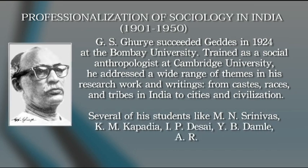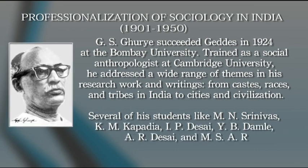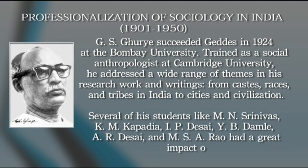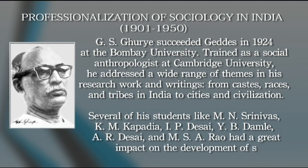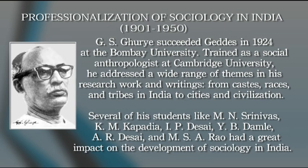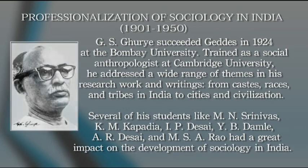Several of Ghurye's students — including M.N. Srinivas, K.M. Kapadia, I.P. Desai, Y.B. Damle, A.R. Desai, and M.S. Rao — had a great impact on the development of sociology in India. As far as Calcutta University is concerned, B.N. Seal and B.N. Sarkar were two leading sociologists of their time. Bose started the first department of anthropology there, while R.K. Mukherjee and D.P. Mukherjee, trained at Calcutta University, taught sociology at Lucknow University.